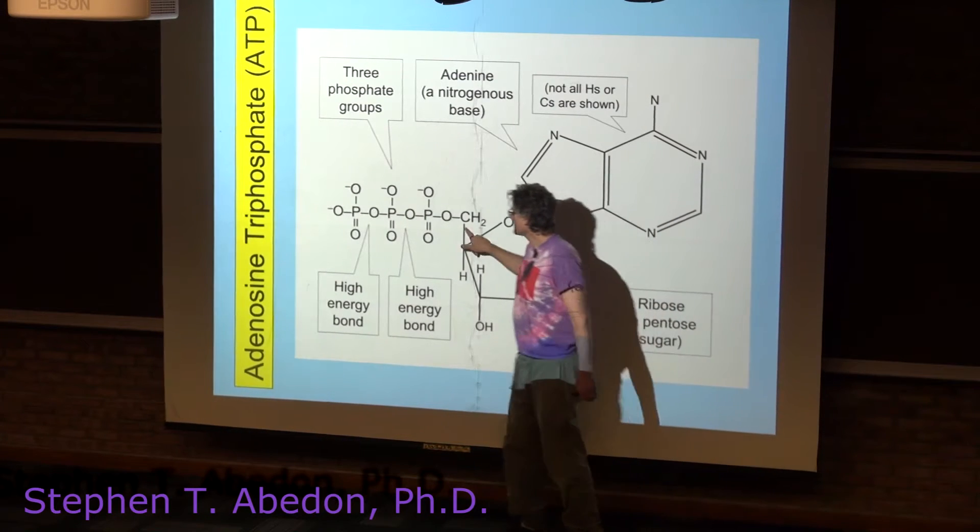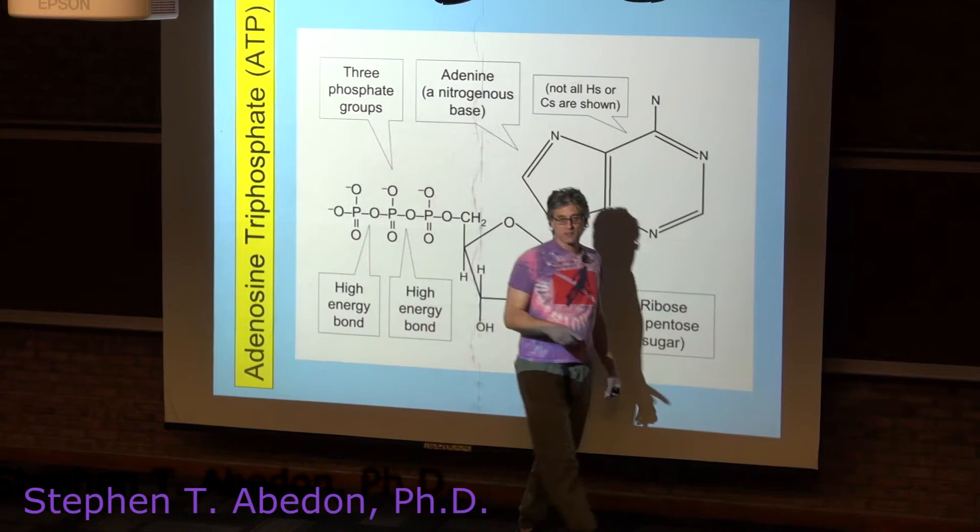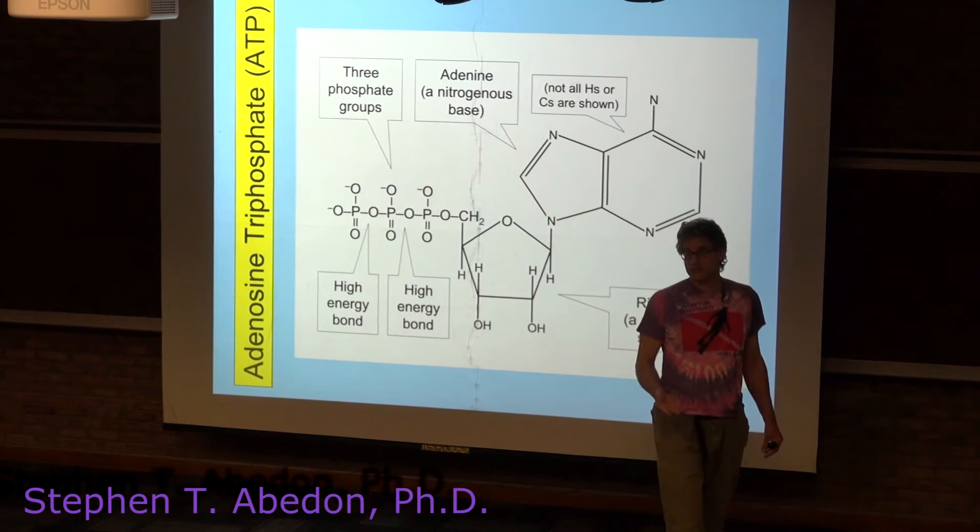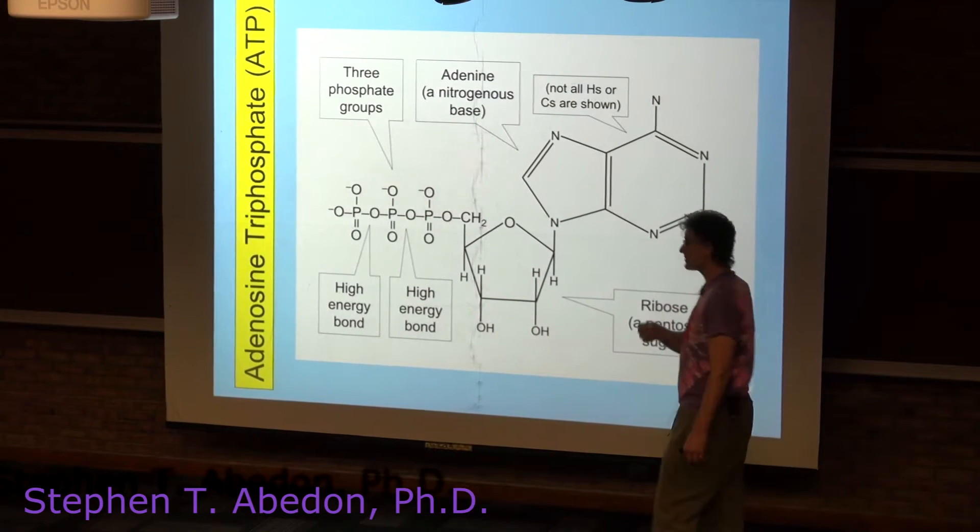And at the other end are phosphate groups. ATP is called ATP because there are three phosphate groups.